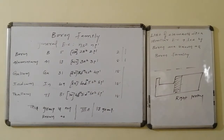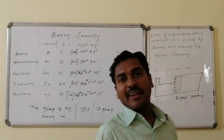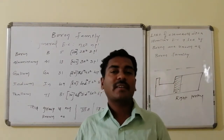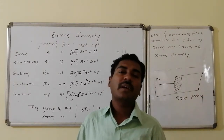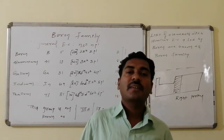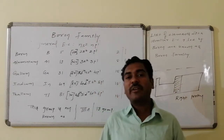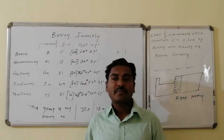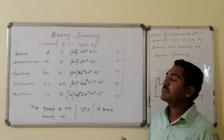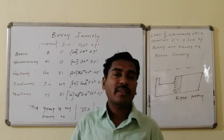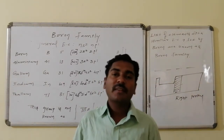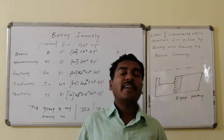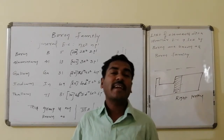This Boron family is also known as the third A group, because the outermost electronic shell has electrons in both the S and P orbitals. As per the modern periodic table, it is also known as the 13th group. In this group of five elements, Boron is the only non-metal and all remaining elements — Aluminium, Gallium, Indium, and Thallium — act as metals.